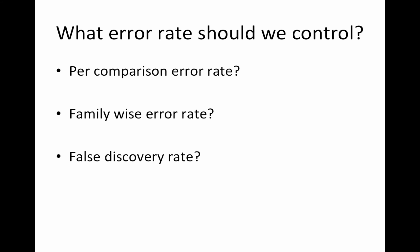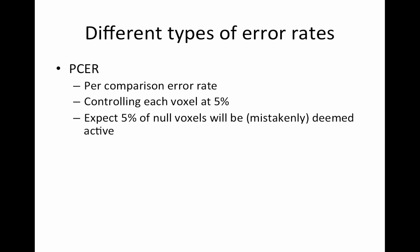So again, what error rate should we control? PCER is per comparison error rate, FWER is family-wise error rate, and FDR is false discovery rate. I'm going to define each of these in two ways: by revisiting the 2x2 contingency table from last time, and then through a simulation illustration.